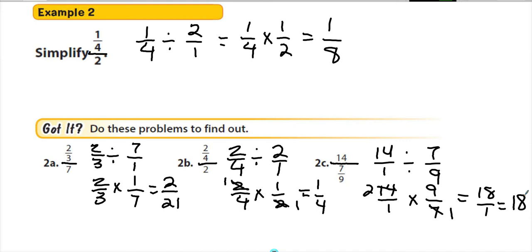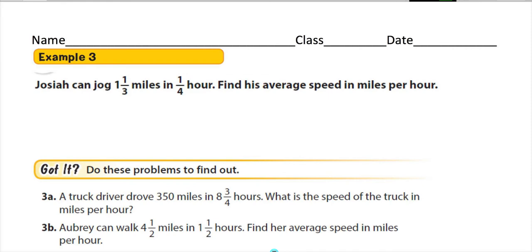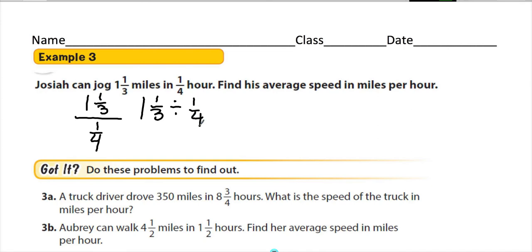Take a minute to catch up if needed, then turn the page. Example 3: Josiah can jog 1 and 1 third miles in 1 fourth hour — find his average speed in miles per hour. This means 1 and 1 third divided by 1 fourth. We can't have mixed numbers when dividing fractions, so convert: 1 and 1 third is 4 thirds. So it's 4 thirds divided by 1 fourth.